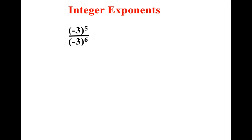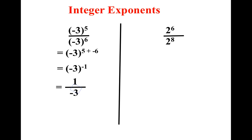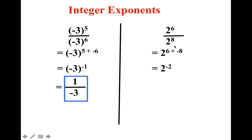Let's give this one a shot. Notice I have the exact same base number, so I subtract my exponents. I end up getting negative 3 to the negative 1, so my base number is negative 3 — and where is that negative 3 located? In the denominator. Let's try this one: imagine I have 6 twos up here and 8 twos down here. How many 2s will be left over, and where? So I subtract and get 2 to the negative 2nd power — my base number is 2, and where will it be located? In the denominator. 2 times 2 is 4.